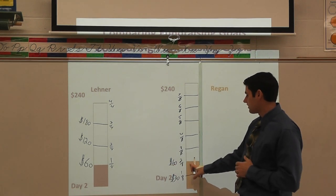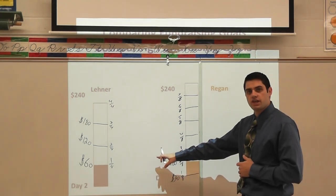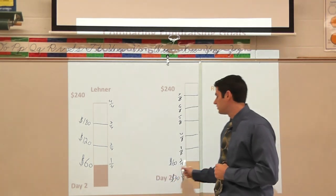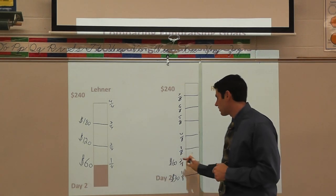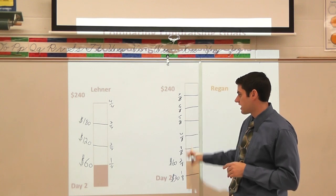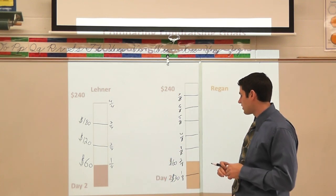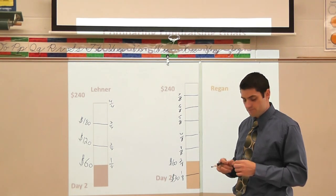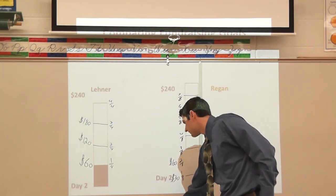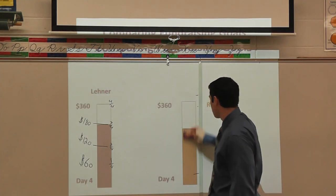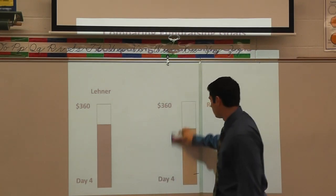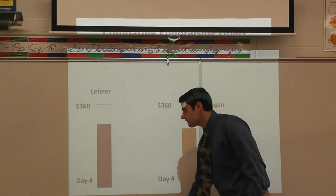Two-eighths of the goal is the same thing as one-fourth because they are equivalent fractions. So after two days, each class has raised the same amount — they both raised sixty dollars, based on our comparison using fraction strips and dividing out the money. Now grab some paper and a pencil, and your fraction strip if you have it — we're going to look at a different scenario.